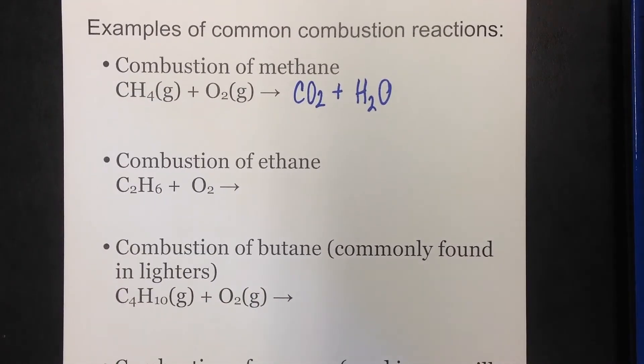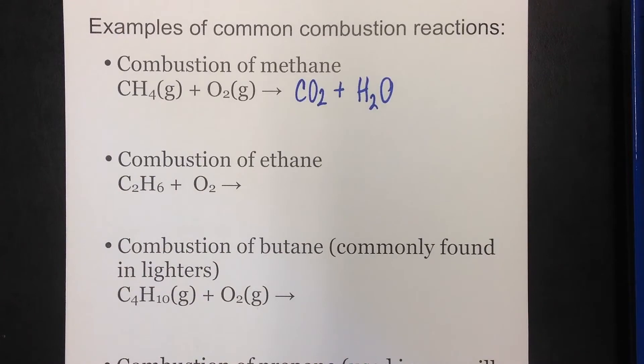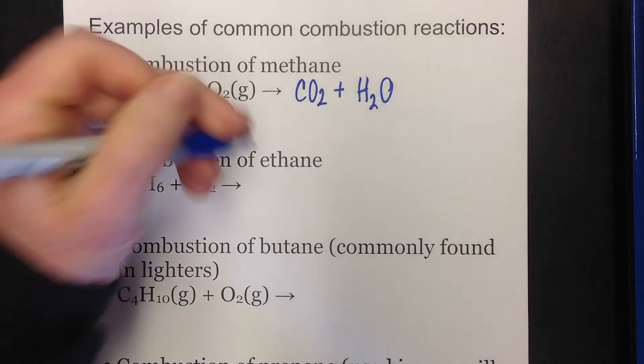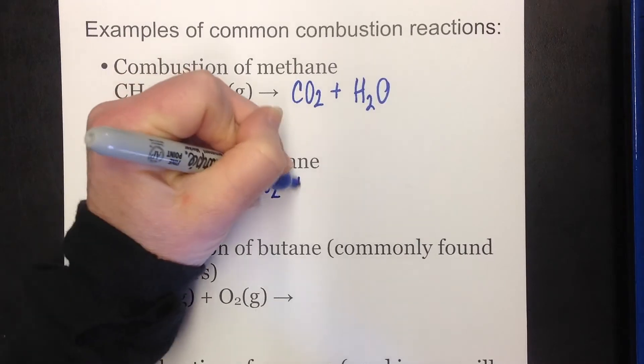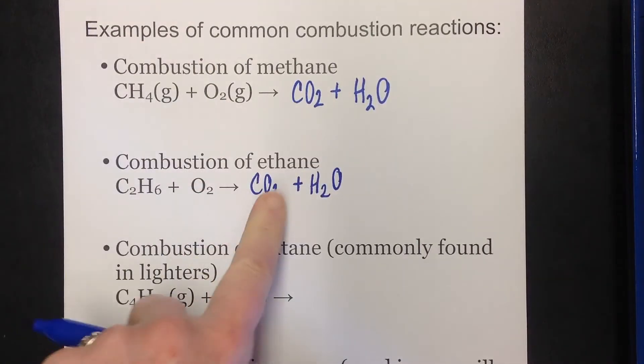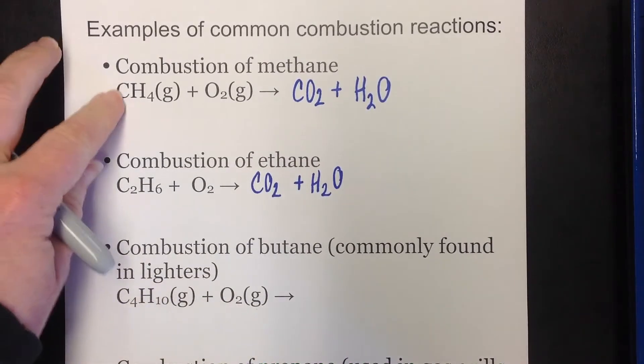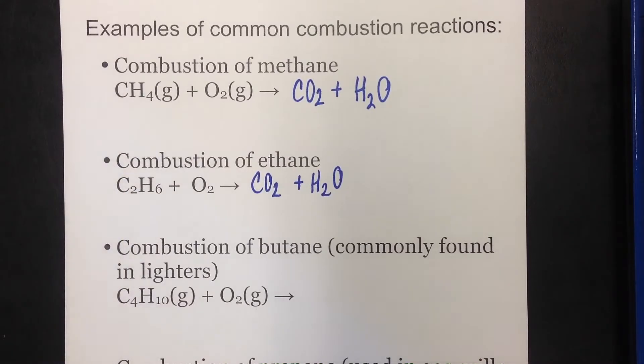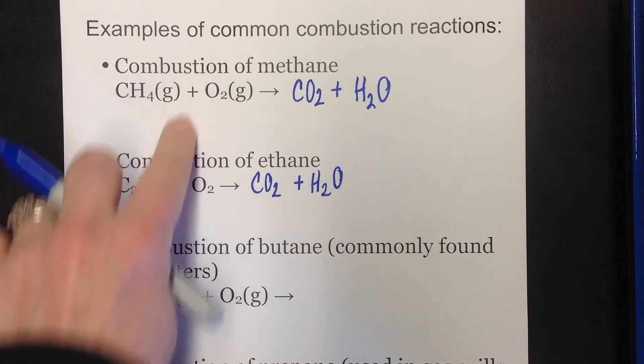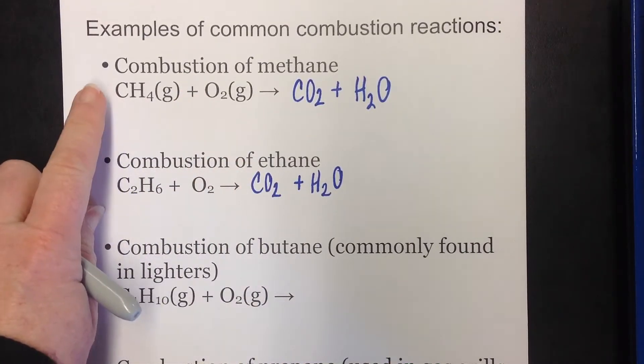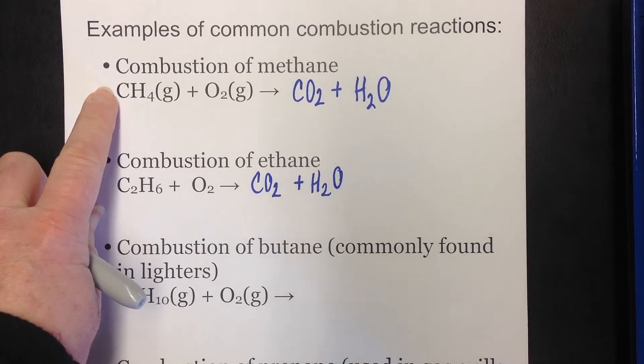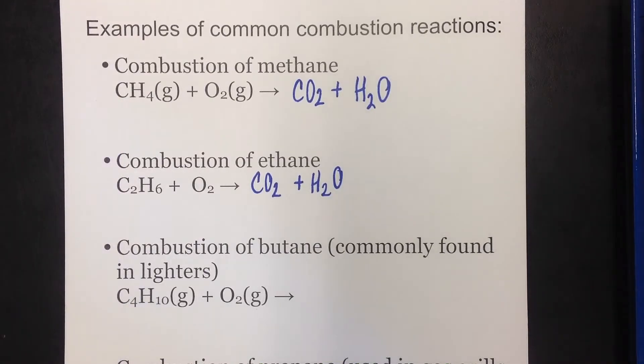So now let's look at the combustion of ethane. Ethane is C2H6. You add some oxygen gas to that, you're going to get CO2 and H2O. The exact same products as the one that we did right before. I do want to point out none of these are balanced. We'll tie balancing into these types of reactions later, but right now we are only predicting the products. When you're balancing combustion reactions, these coefficients tend to get a little higher than what we're normally used to seeing.